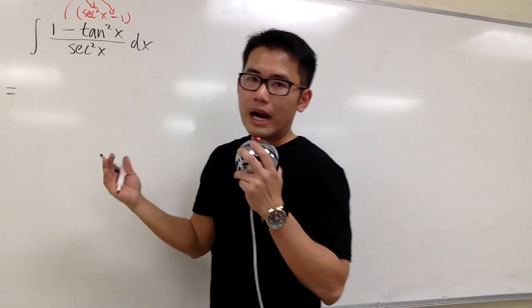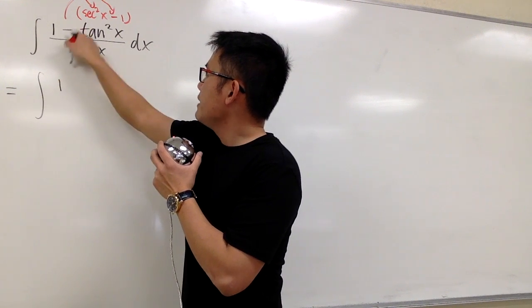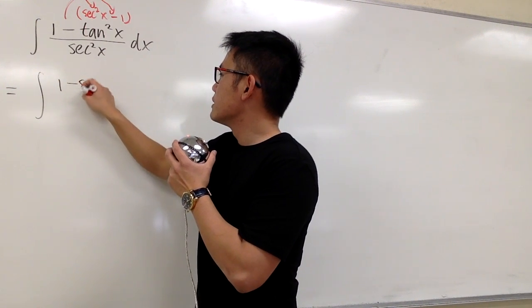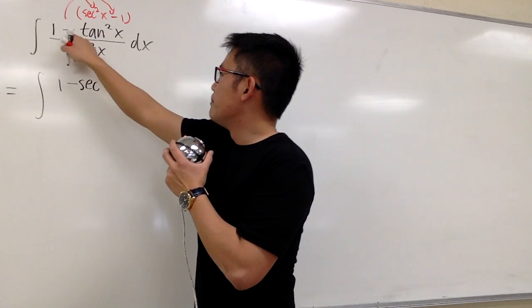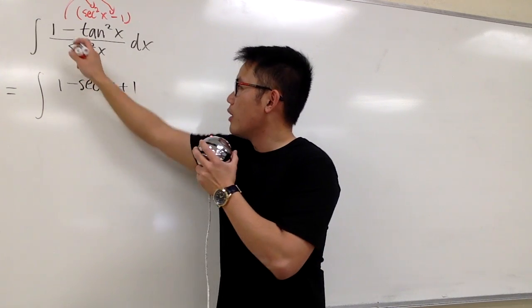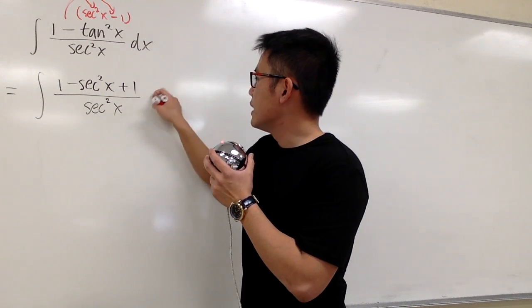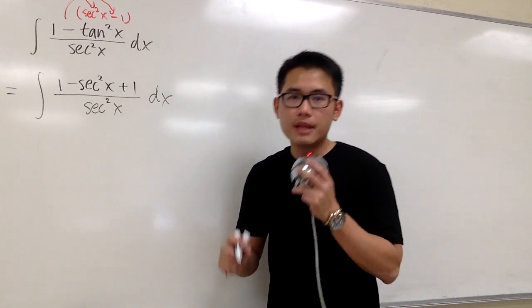This way, we will have the integral, 1 is still the 1, minus secant square x, and then minus times minus 1, that's plus 1. And we still have all over secant square x, and we still have the dx on the side. And we'll continue.